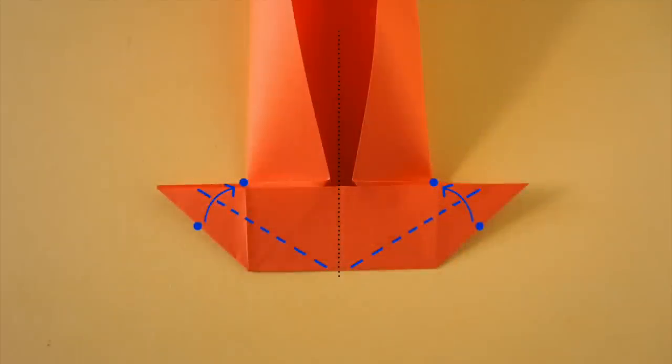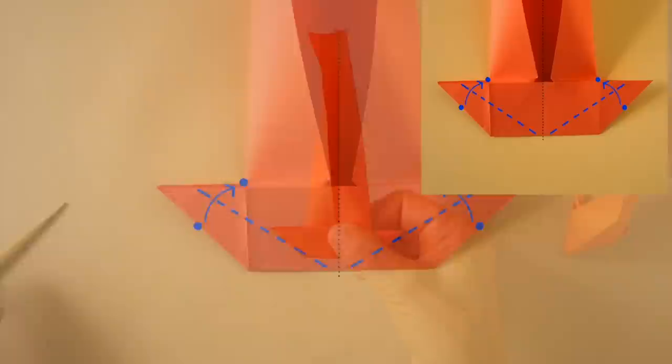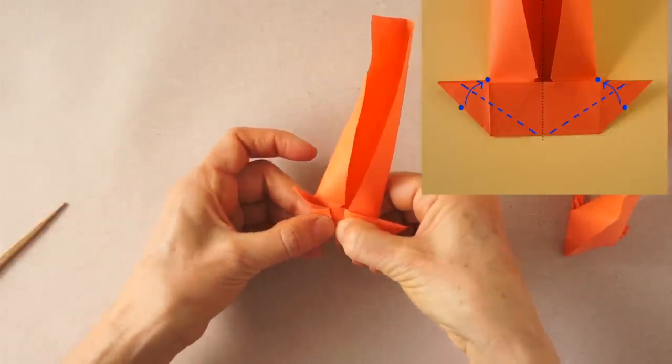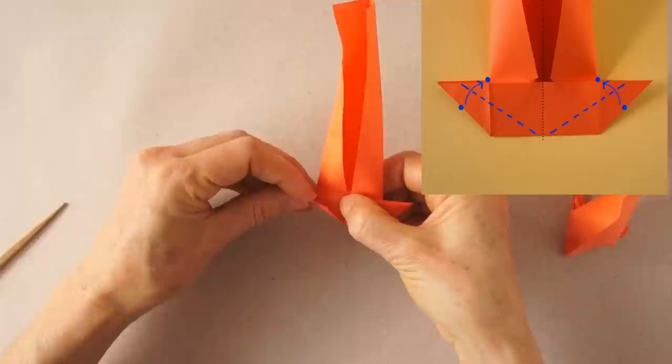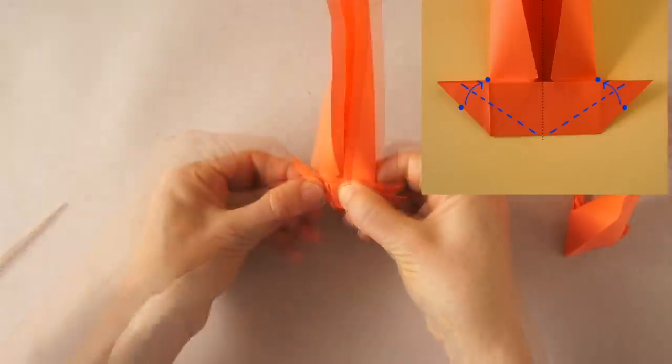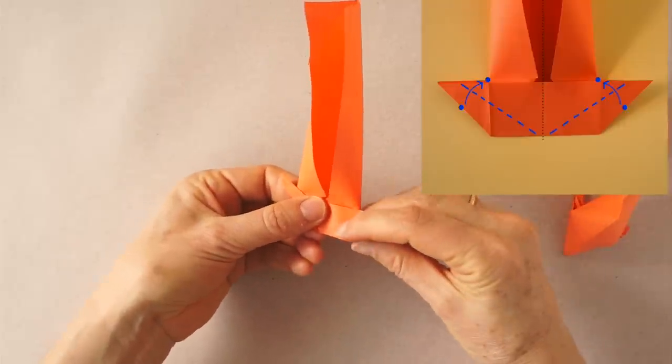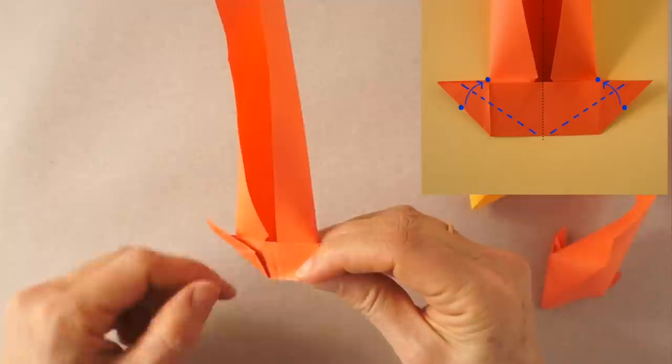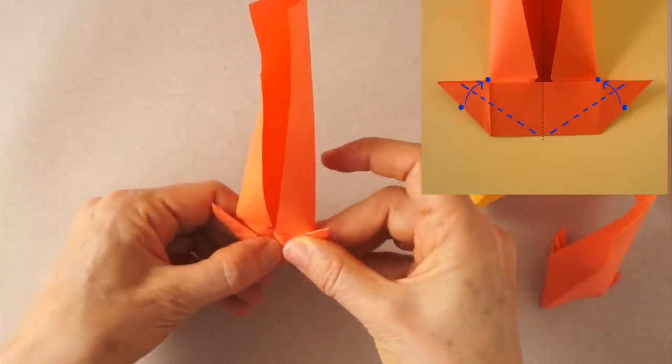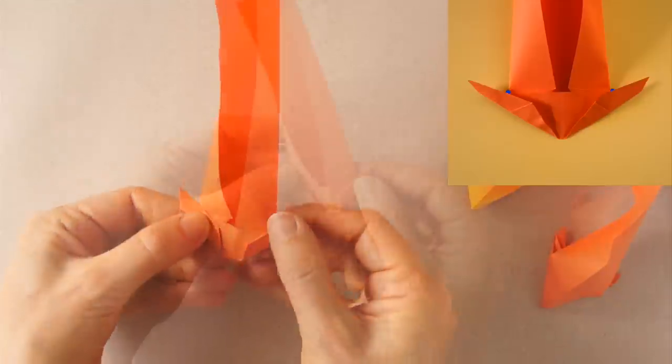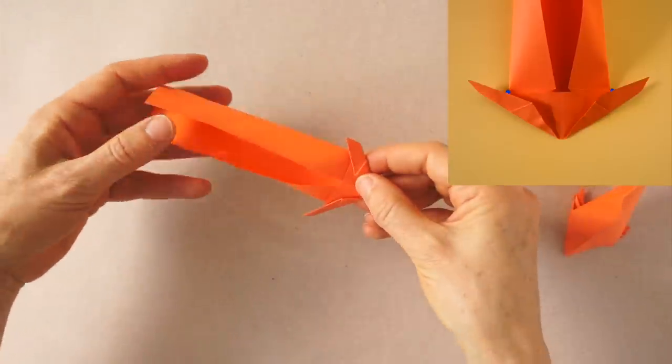This is a close-up. The diagram shows where the folds should go. About there. Same here. Rotate. Turn over.